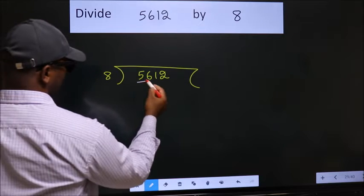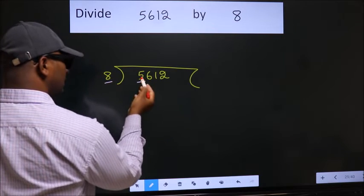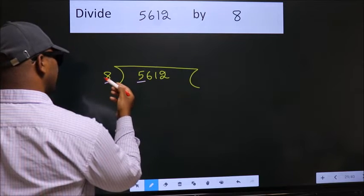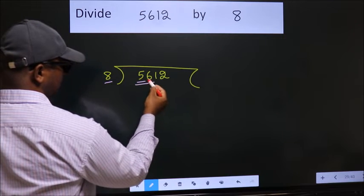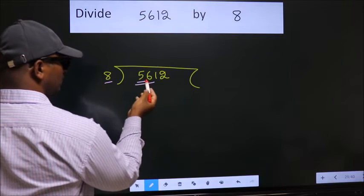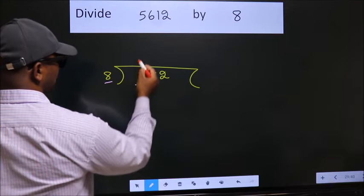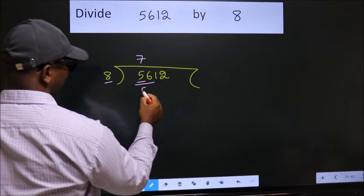Here we have 5. Here 8. 5 is smaller than 8. So we should take two numbers 56. When do we get 56 in 8 table? 8 7's 56.